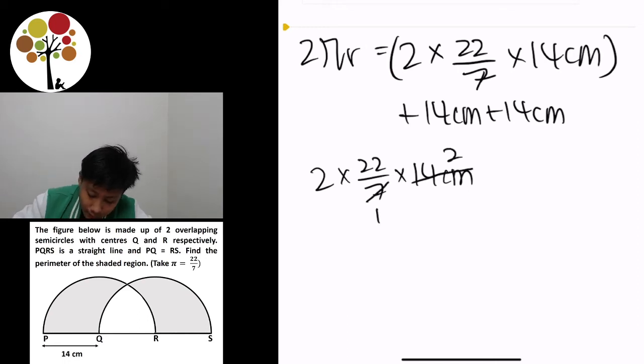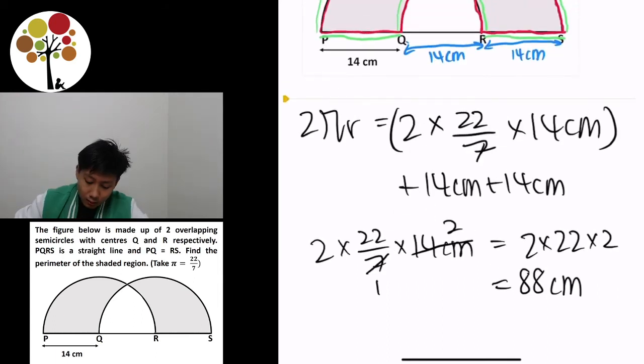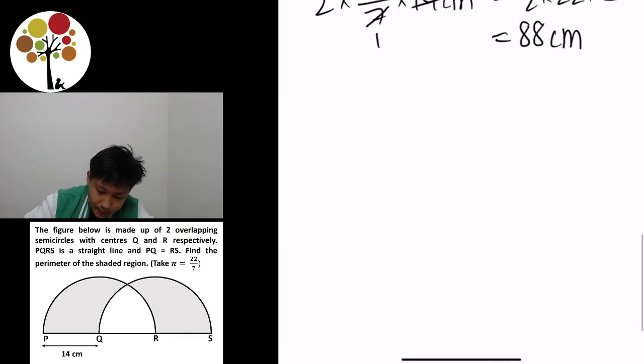And then you will get 2 times 22 times 2, which is equal to 88 cm. So that is the perimeter of one whole circle. And now we simply just add the 2 fourteens.